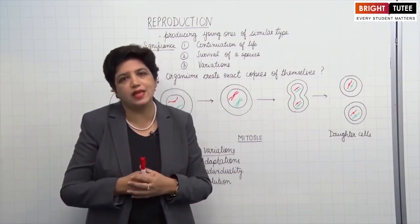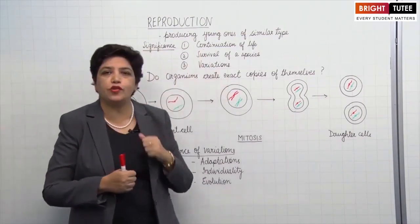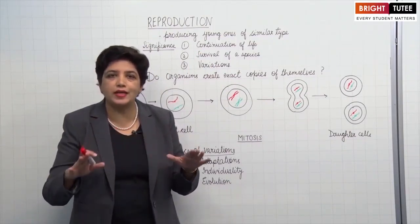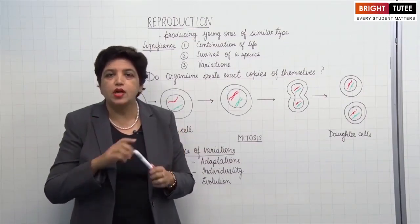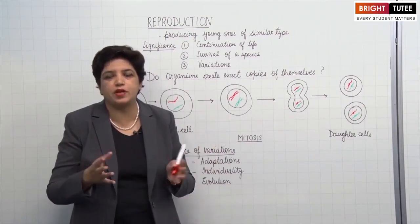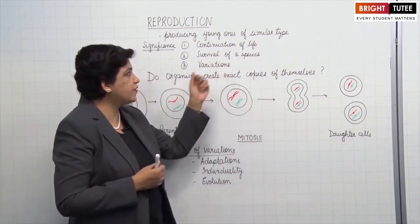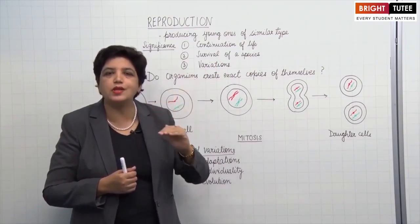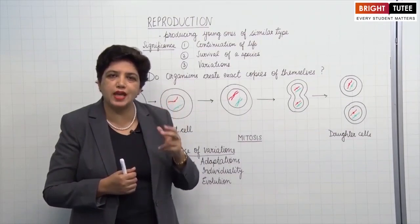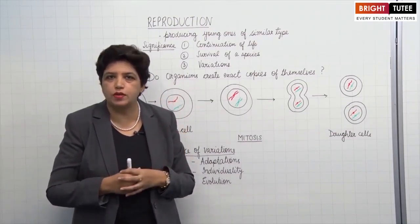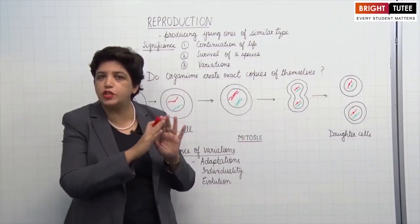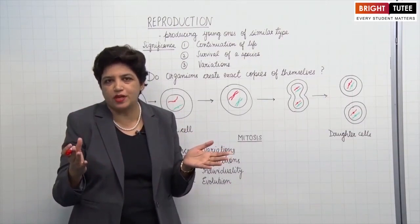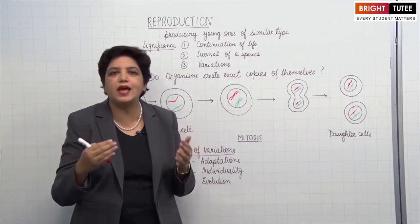But then, we all organisms do reproduce. What is the significance of reproduction? Firstly, continuation of life — reproduction is very important for continuation of life on earth. If all organisms cease to reproduce, the whole life on earth will vanish within a span of few years. Second, survival of a species. During reproduction, the hereditary material, the information, is passed on to the next generation for each species. So each species is able to survive and continue because of reproduction. If all organisms in a species do not reproduce, ultimately all of them will grow old and die, and the species will disappear from the earth.